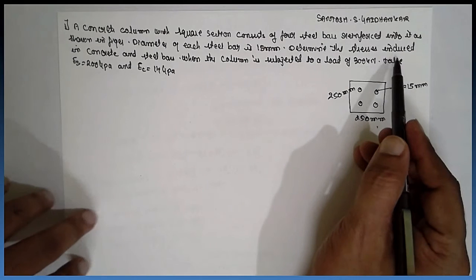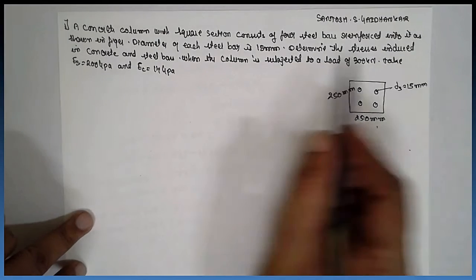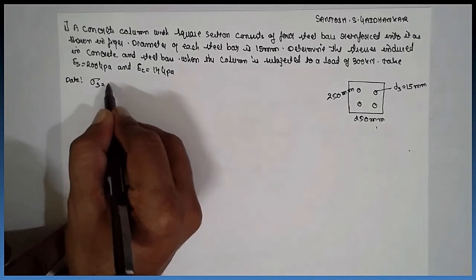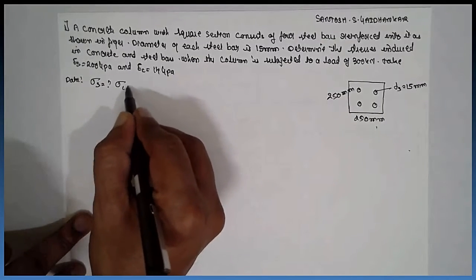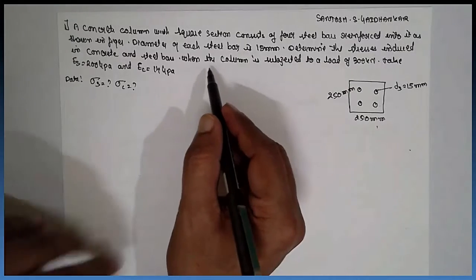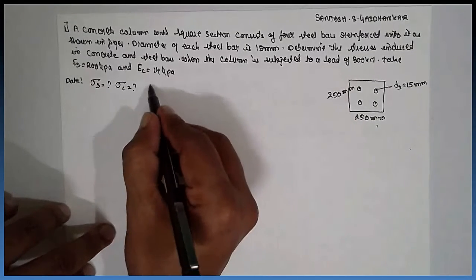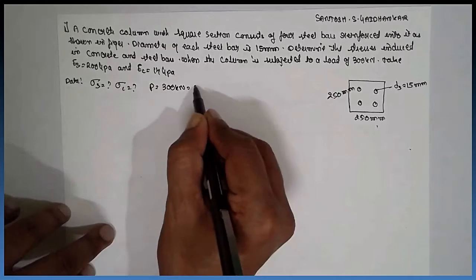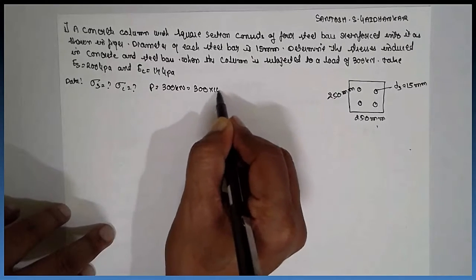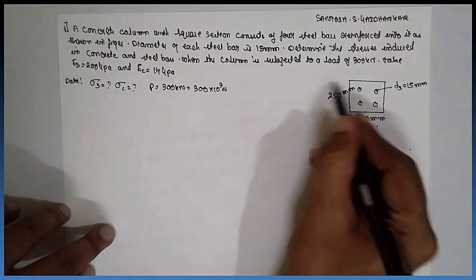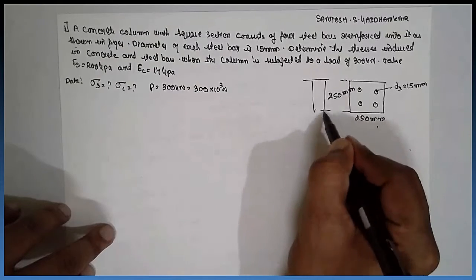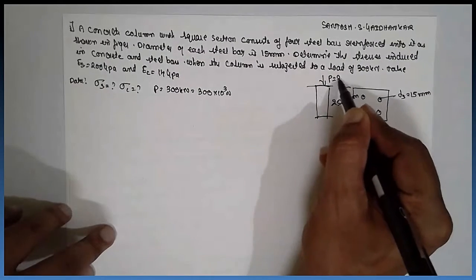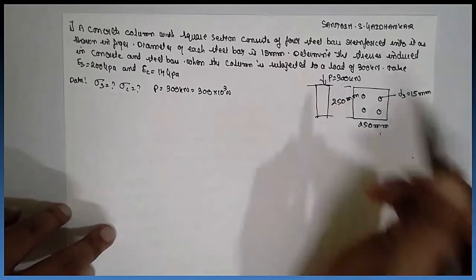Determine the stresses induced in the concrete and steel when the column is subjected to a load P of 300 kN, or 300 times 10 to the power 3 N. The load is subjected here.